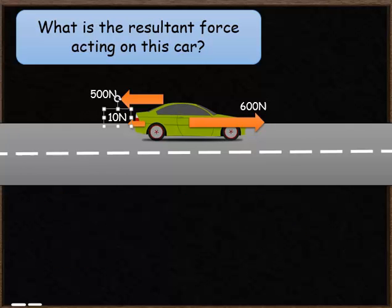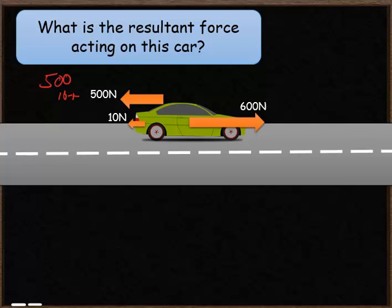For the second question, we've got two forces acting in the backwards direction and one force acting in the forwards direction. The force acting in the forwards direction is 600 newtons. Because we've got two forces acting in the backwards direction, we need to add them together: 500 plus 10 works out as 510 newtons in the backwards direction.